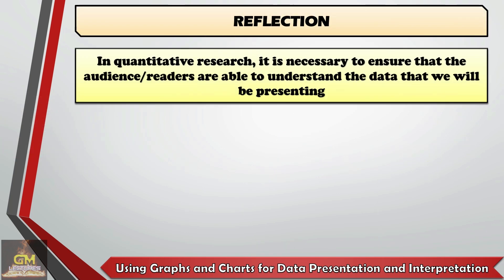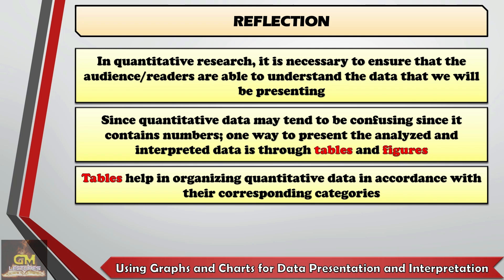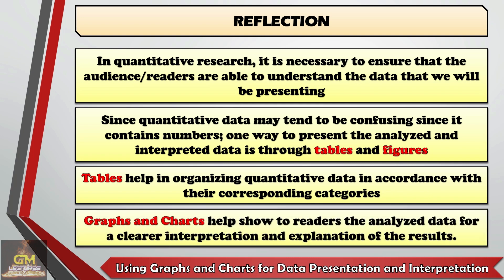In a nutshell, in quantitative research, it is necessary to ensure that the audience or readers are able to understand the data being presented. Since quantitative data may tend to be confusing as it contains numbers, one way to present the analyzed and interpreted data is through tables and figures. Tables help in organizing quantitative data in accordance with their corresponding categories, while graphs and charts help show readers the analyzed data for clear interpretation and explanation of the results.